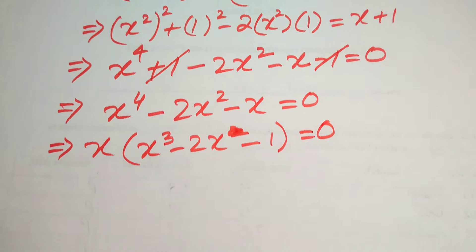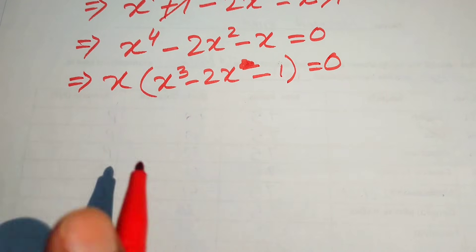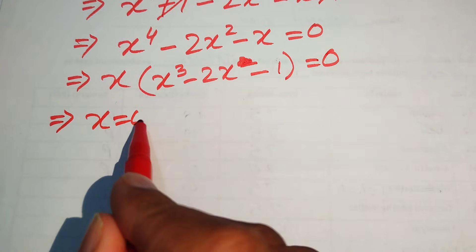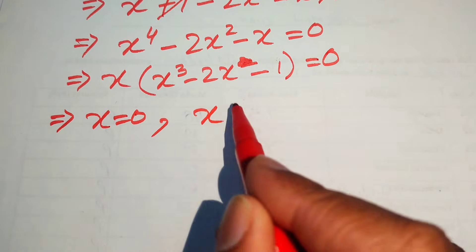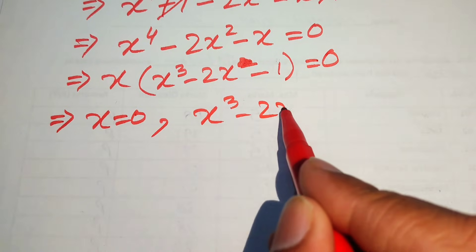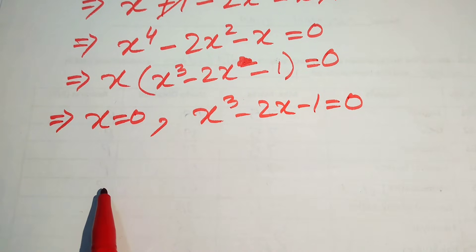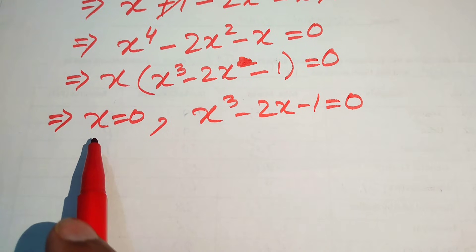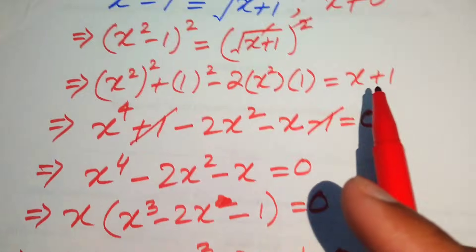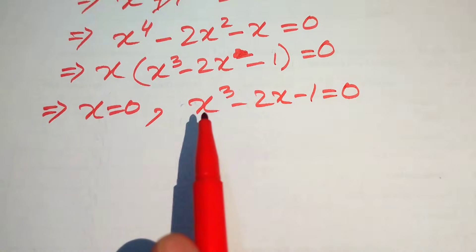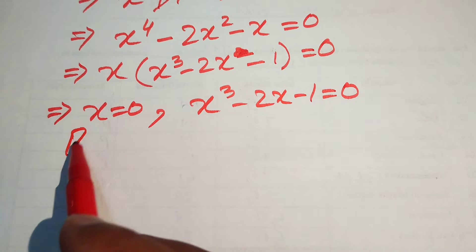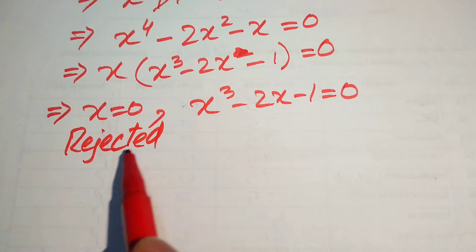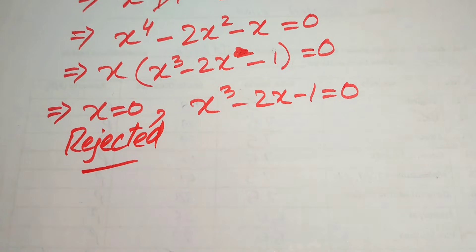We divide this into two cases. The first case is x equals 0, and the second case is x cubed minus 2x minus 1 equals 0. From the first case we get x equals 0, but at the start we stated that x is non-zero, so this is not possible. We reject this case and proceed with the second case only.